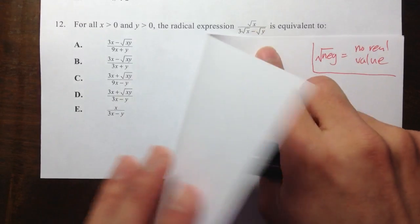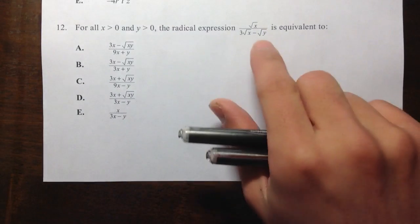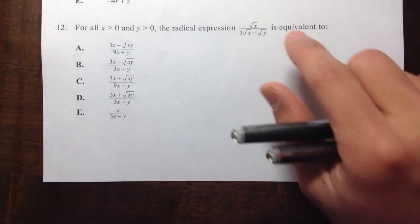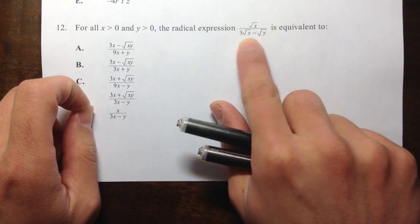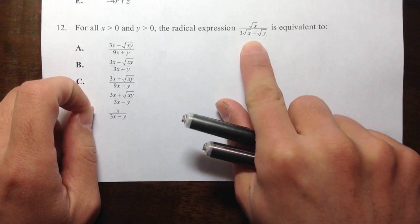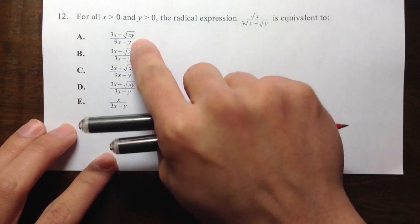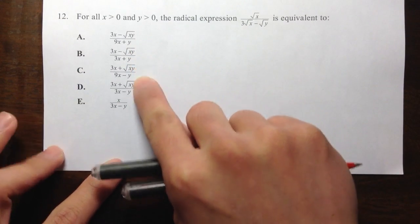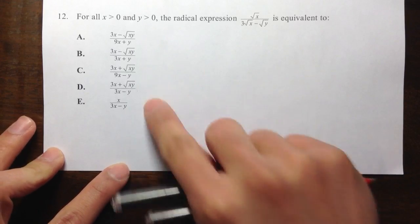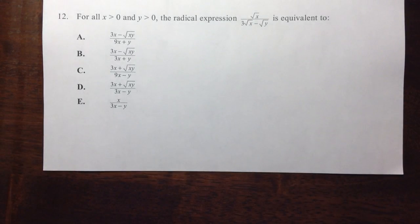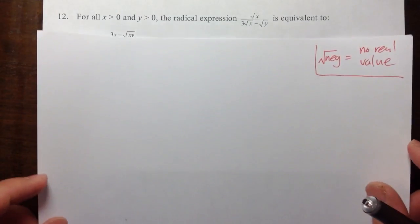Let's take a look at the answer choices. As we can see, originally we have square roots in the denominator, but in the answer choices there are no more square roots on the denominator. So how do we do this?